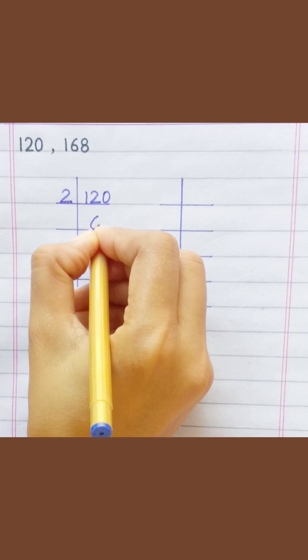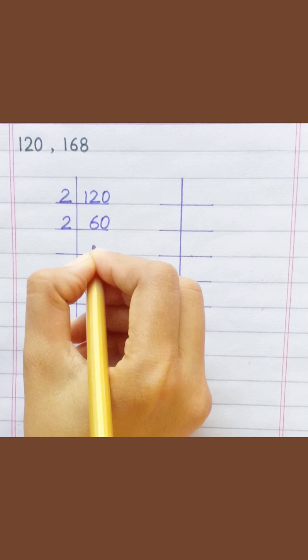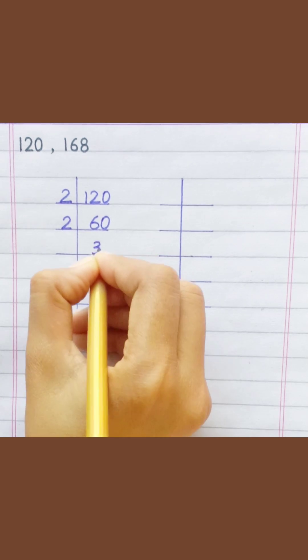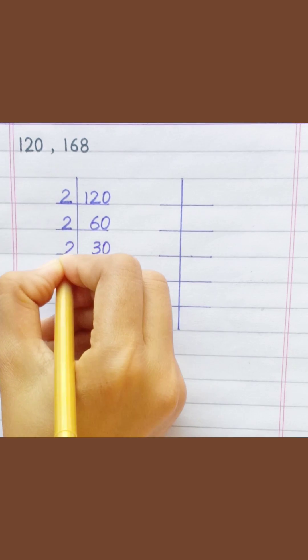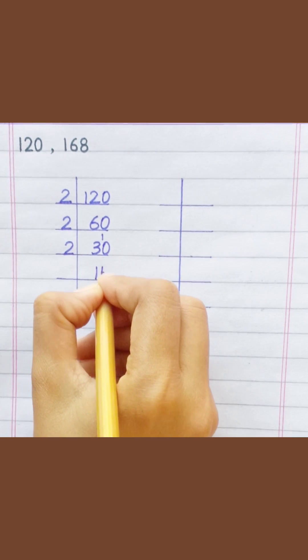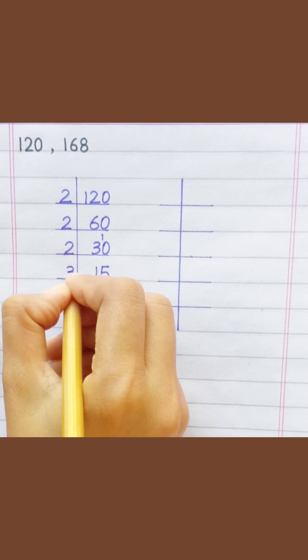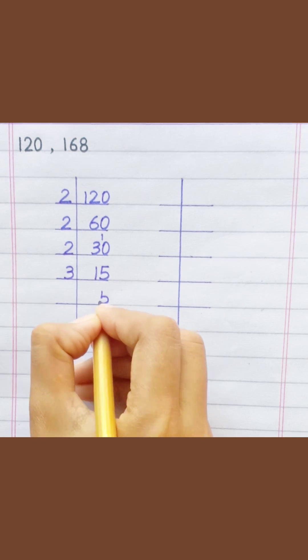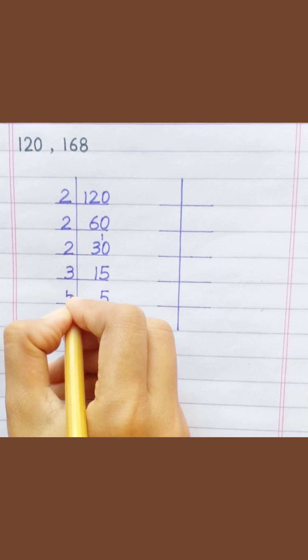Two sixes are twelve, two zeroes are zero, two threes are six, two zeroes are zero, two ones are two, two fives are ten, three fives are fifteen, five ones are five.